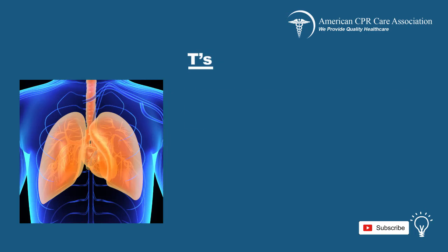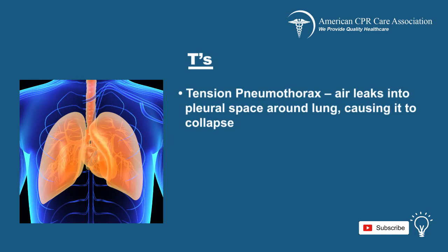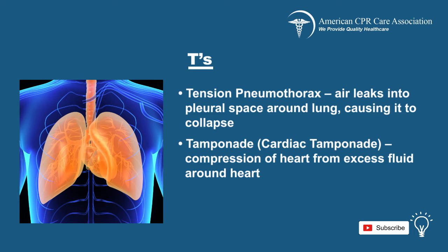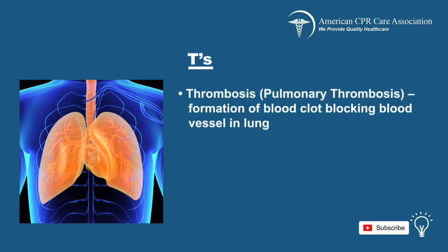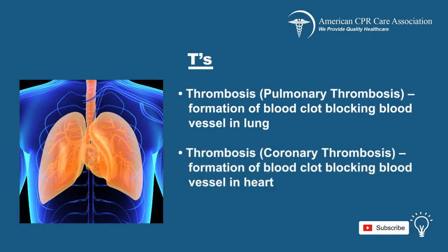The Ts are: Tension pneumothorax, when air leaks into the pleural space around the lung causing the lung to collapse; Tamponade, also known as cardiac tamponade, the compression of the heart produced by excess fluid surrounding the heart; Toxins, poisonous substances that cause cardiac arrest; Pulmonary thrombosis, a formation of a blood clot which blocks a blood vessel in the lungs; and Coronary thrombosis, a formation of a blood clot that blocks a blood vessel in the heart.